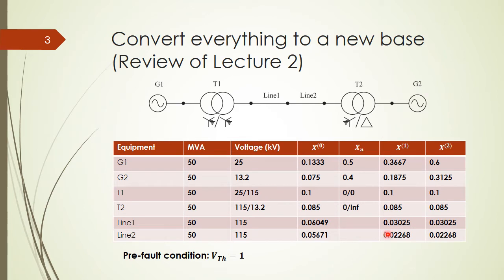We also have the positive sequence and negative sequence reactance for each element. Because of our assumption in the problem, there is no current flowing in the circuit before the fault happens — there is no load, so the lines carry no power. Therefore the pre-fault condition is that the voltage everywhere equals 1 PU.